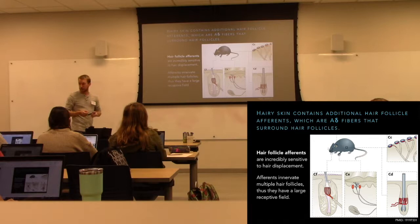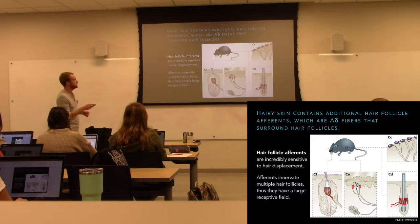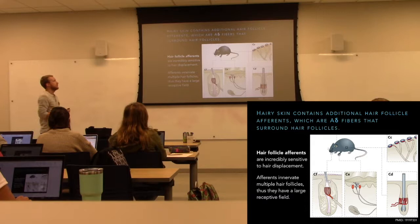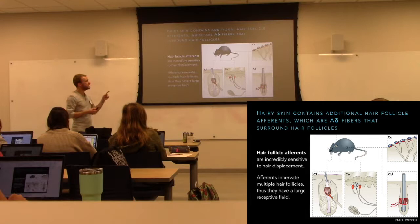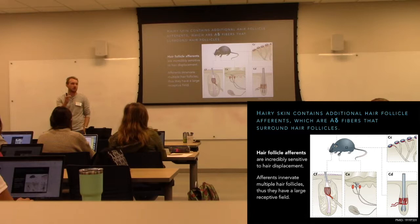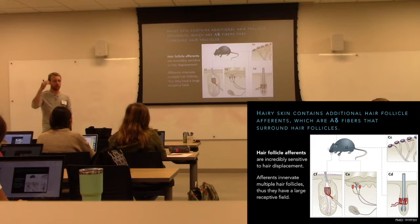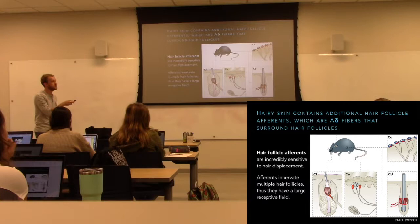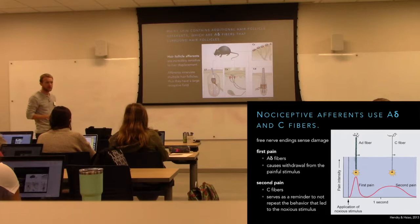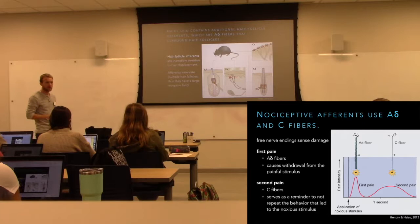Afferents also wrap around hair follicles — when the hair follicle moves, it pulls open stretch receptors. These generally have a slightly larger receptive field, making them more sensitive due to greater numbers of inputs. This allows whiskers of a mouse to be very sensitive in detecting their world. Hair follicle afferents use A-delta fibers rather than A-beta — they're still myelinated but smaller, making them more excitable. So you can feel the wind gently moving your hair because it's innervated by smaller, more excitable A-delta fibers. This is the size principle all over again — Ohm's law.